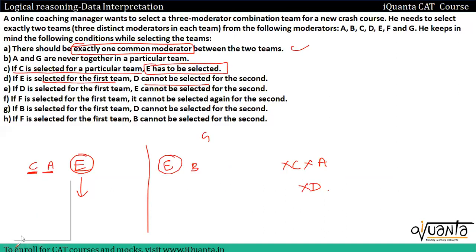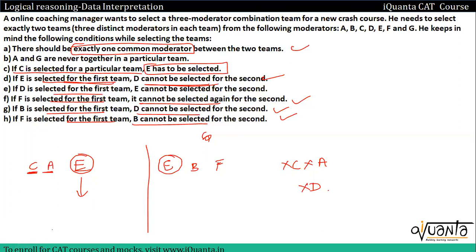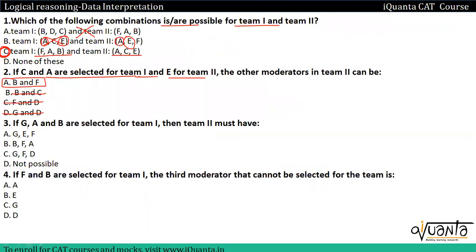So the direct answer here is option number A, that is B and F. Bringing F here: if F is selected for a particular team, B cannot be selected for the second — correct. If B is selected for a particular team, D cannot be selected for the second — correct. F is in the first team, so it cannot be selected again — correct. D was not selected. E is in the first team, so D cannot be in the second. This is the correct answer — option number A.